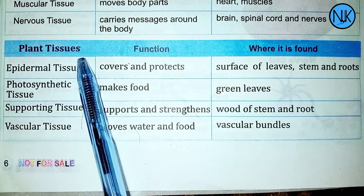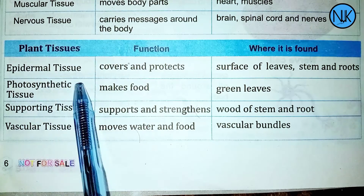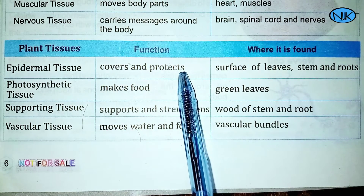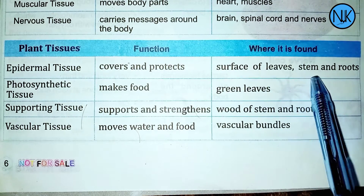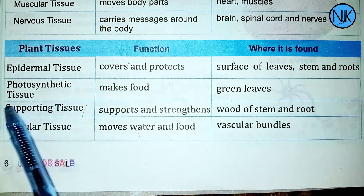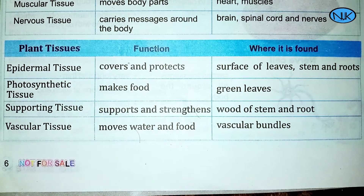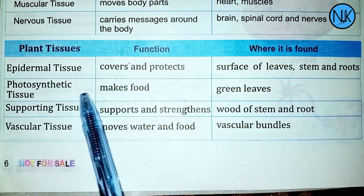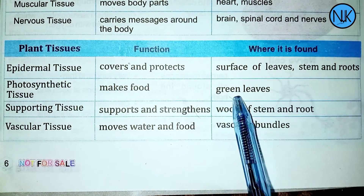Plant tissue: epithelial tissue covers and protects. Photosynthetic tissue — also called protosynthetic tissue — has the function of producing food. It is found in green leaves.